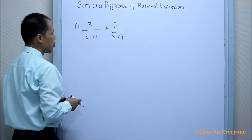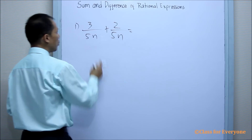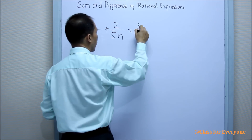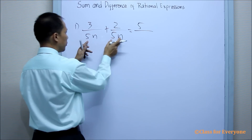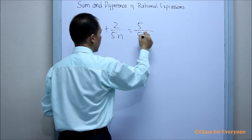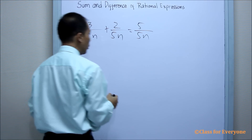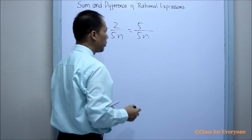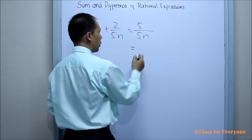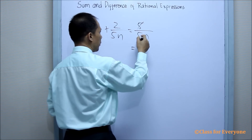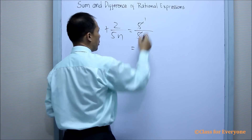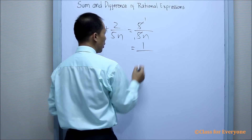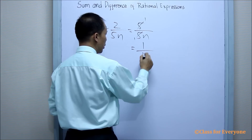And since it is similar, we are going to add the numerator, which is five, over — copy the denominator — five N. Notice that there is a common factor between the numerator and the denominator. So, we can divide out five and five. This will be one and one. So, the numerator will now be one, and the denominator is N.